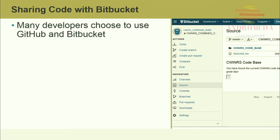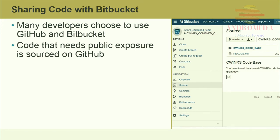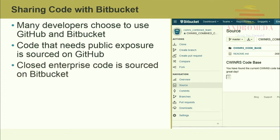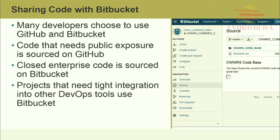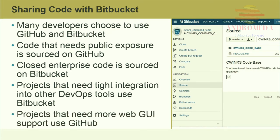Many developers choose to use both GitHub and Bitbucket. If you use Git as your ultimate code repository, projects and teams can move between the two tools pretty easily. Code that needs public exposure is sourced on GitHub — public exposure adds to the marketing of the project. Closed enterprise code is sourced on Bitbucket, as private repositories do not get the attention of public repositories. Projects that need tight integration into other DevOps tools tend to use Bitbucket, while projects that need more web GUI support use GitHub, though both of the last points may be subjective depending on the application.